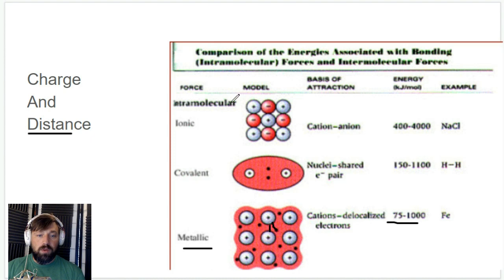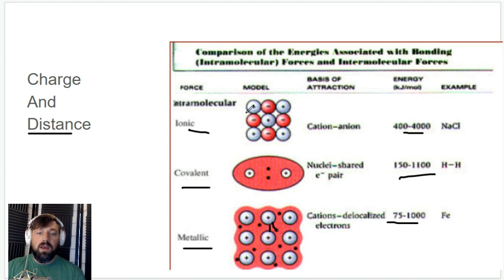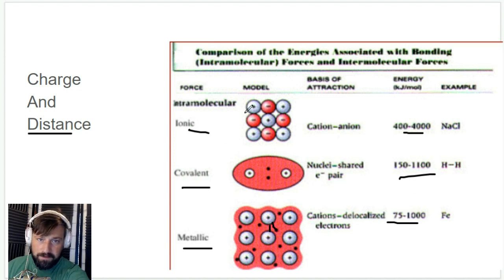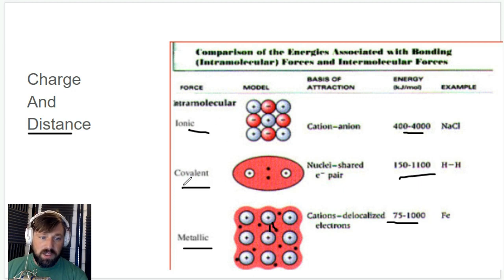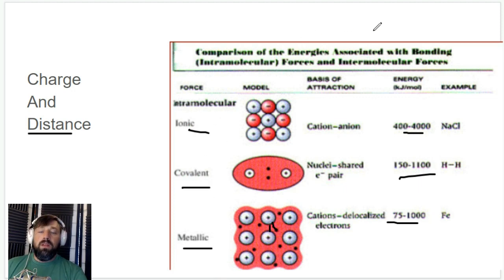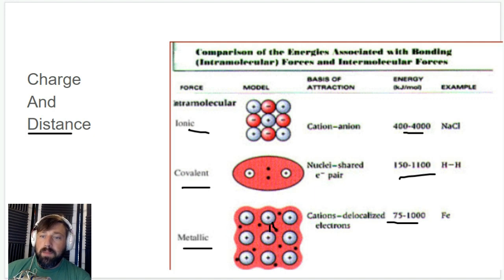So those are three different types of bonds and how their bond energies compare. If you just want to memorize a fact: ionic is the strongest, then covalent, then metallic — one, two, three.